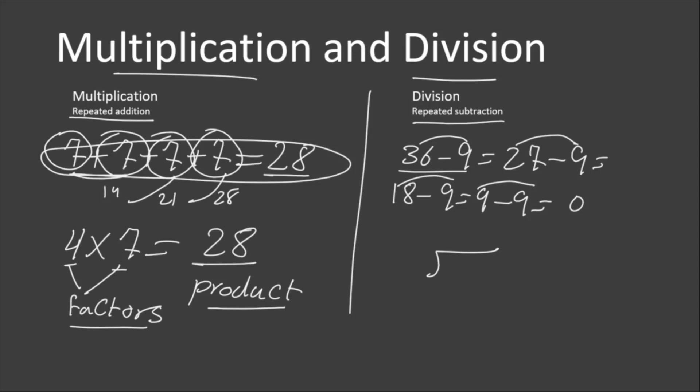The number we are going to subtract 9 from is put here under the division sign, and the number that we are going to subtract repeatedly is put here. How many times 9 can be divided into 36? It can be divided 4 times. 4 times 9 equals 36, so 36 minus 36 is equal to 0.